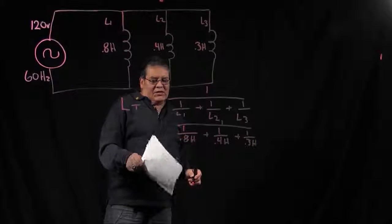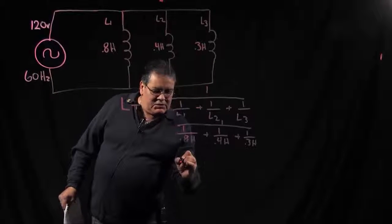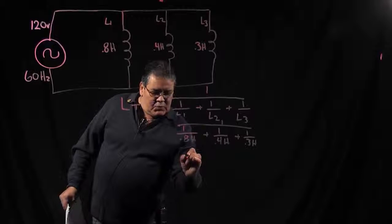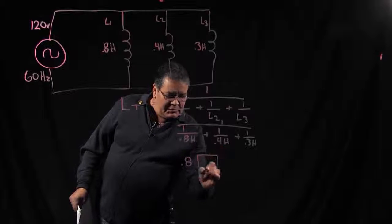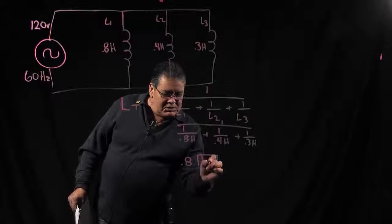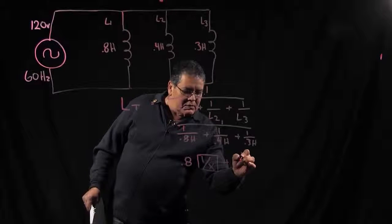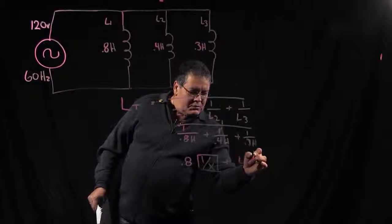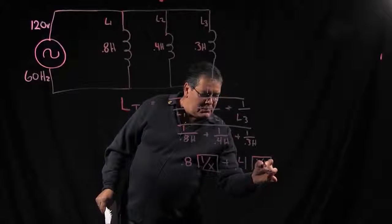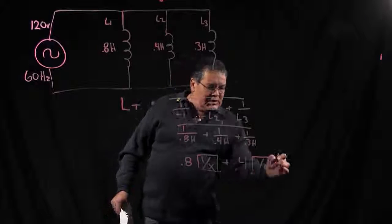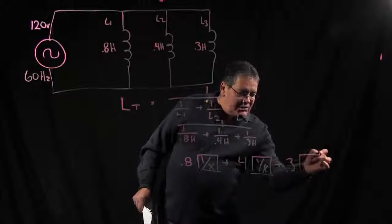So the most important thing that you need to remember is how to plug these numbers into your calculator. What you're going to do is enter 0.8, hit the reciprocal button, plus 0.4, hit the reciprocal button one more time, plus 0.3, the reciprocal button.